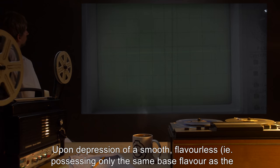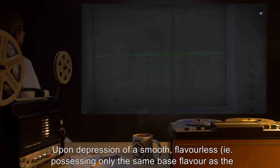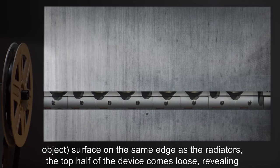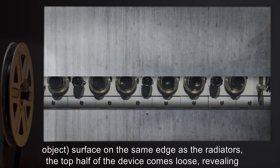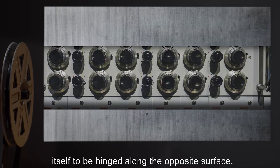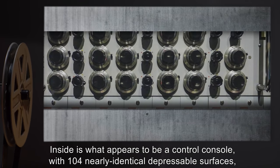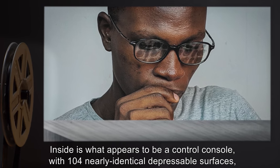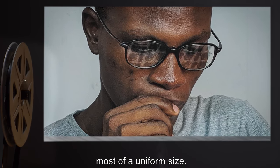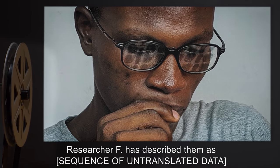Of a smooth, flavorless (i.e., possessing only the same base flavor as the object surface) on the same edge as the radiators, the top half of the device comes loose, revealing itself to be hinged along the opposite surface. Inside is what appears to be a control console with 104 nearly identical depressible surfaces, most of a uniform size.